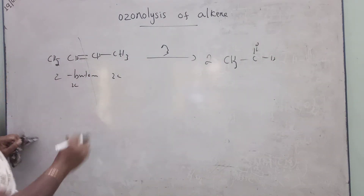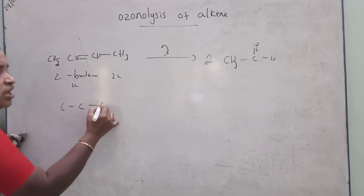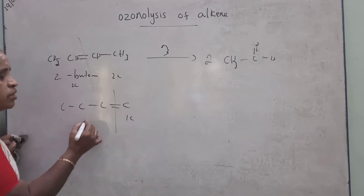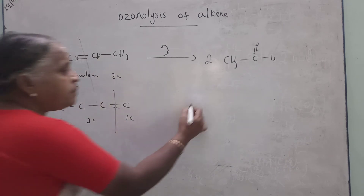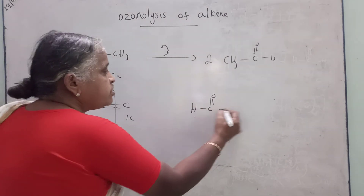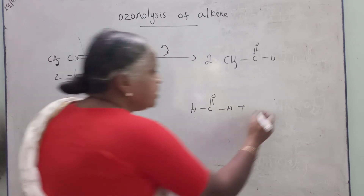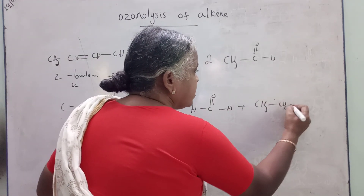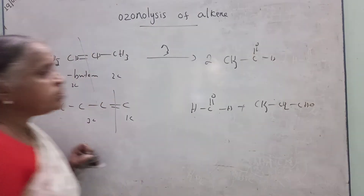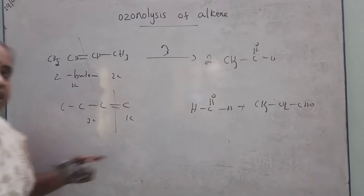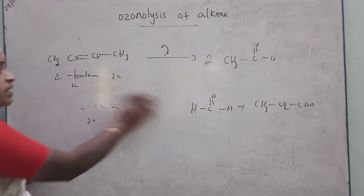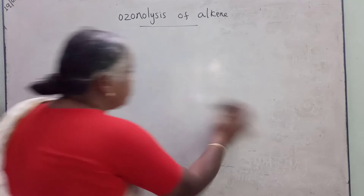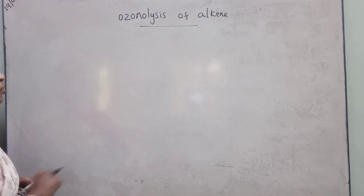If you go for 1-butene — this structure is 1-butene. Then you will get acetaldehyde with a 3-carbon fragment, which is also called acetaldehyde. So from 1-butene, ketone is one of the products alongside acetaldehyde.